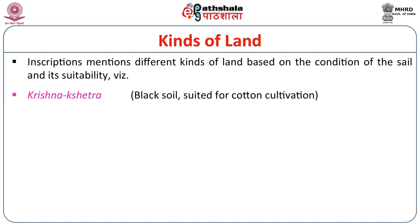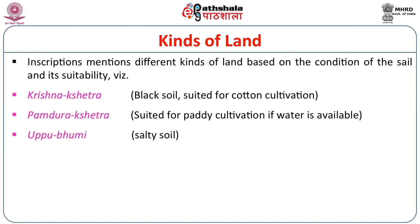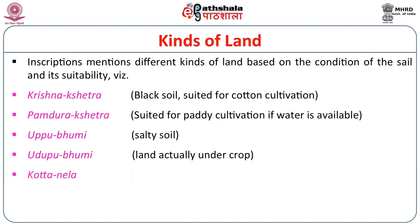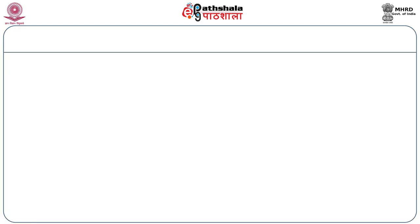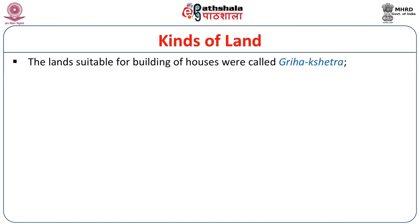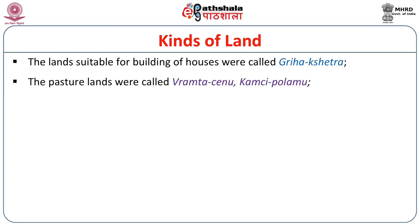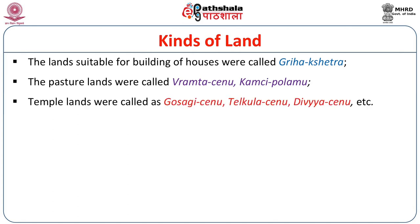The first division is Krishna Chetra, which means black soil very suitable for cotton cultivation. Bamthura Ketra is suitable for paddy cultivation. Uppu Bhumi is a salty soil. Uduppu Bhumi is land actually under crop cultivation. Kota Nila is land newly brought under cultivation. Metunula is a rocky soil unfit for the cultivation of any crops. The lands suitable for building houses were called Griya Chetra. The pasture lands were called Vramajenu and Kamsi Bolumu. Temple lands were called Koshakishenu, Delgulushenu, Divyashenu, and other designations.